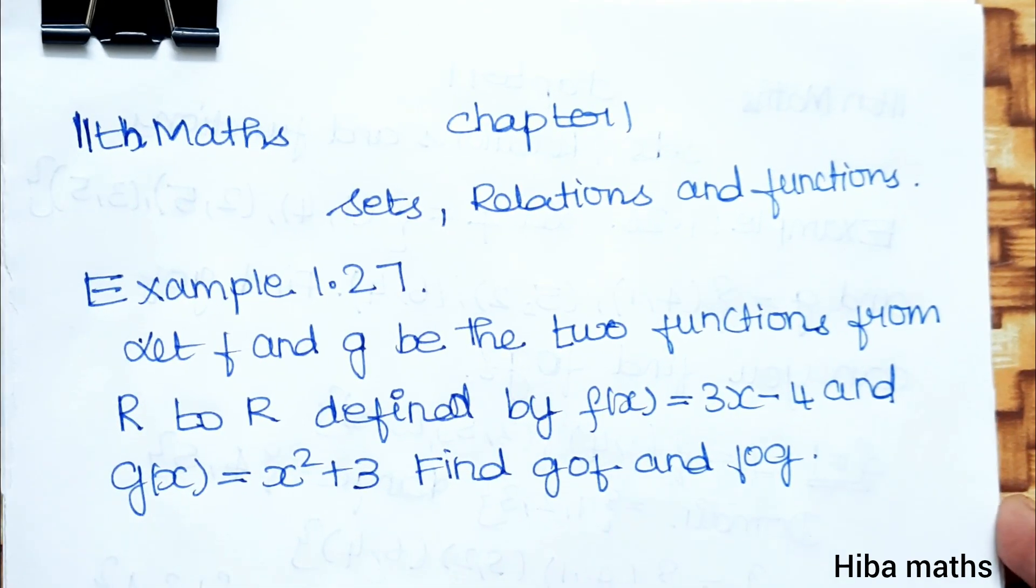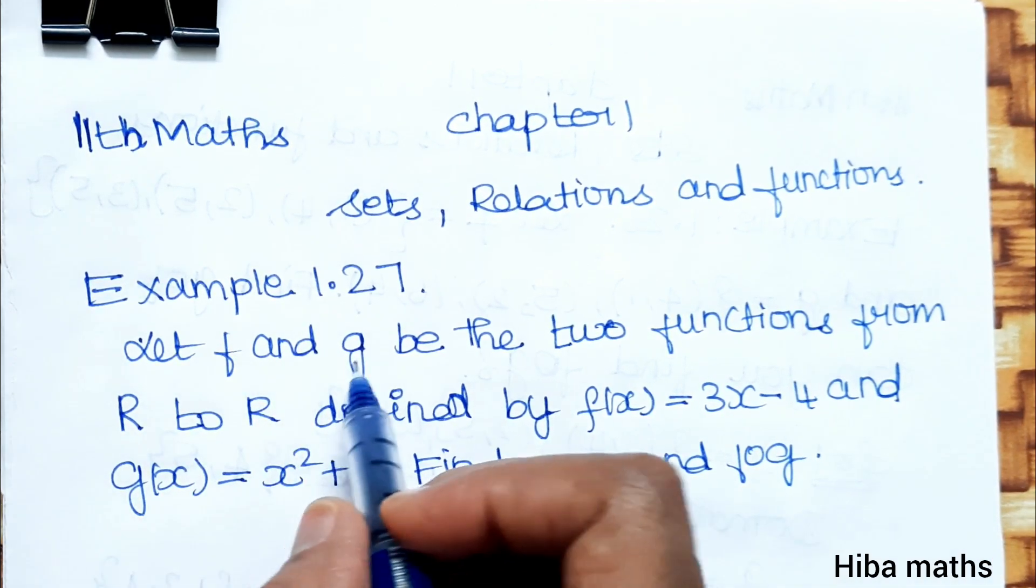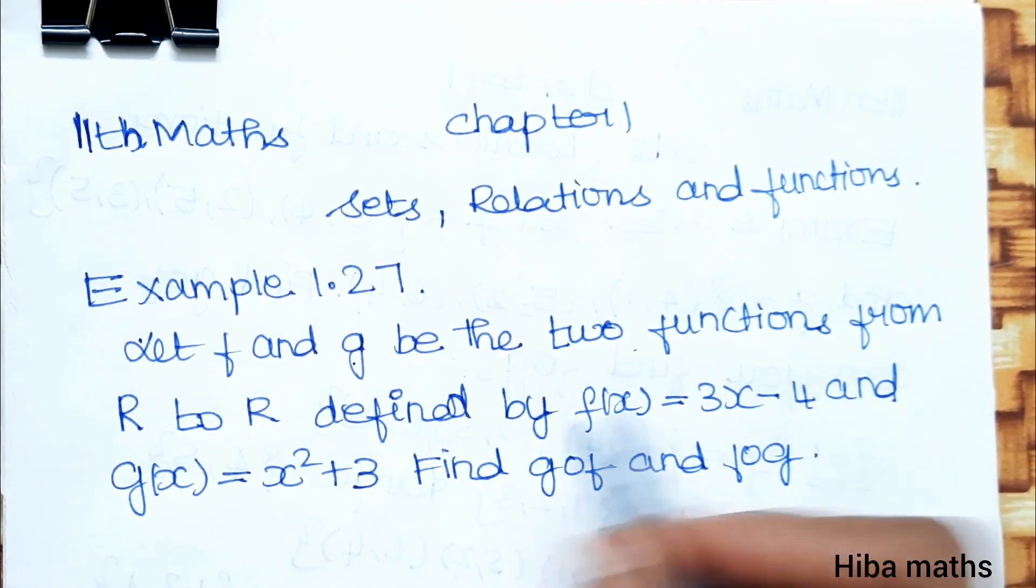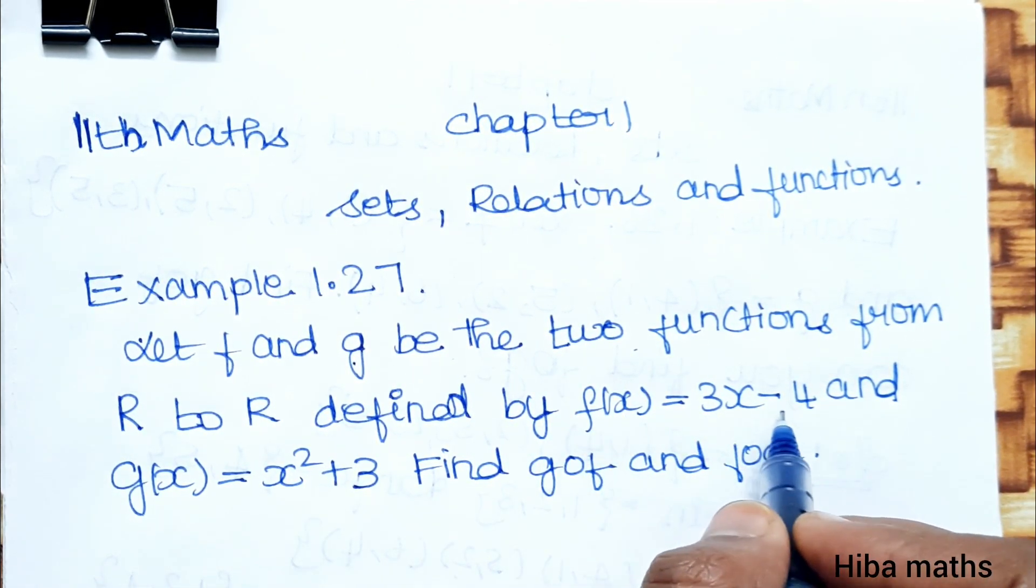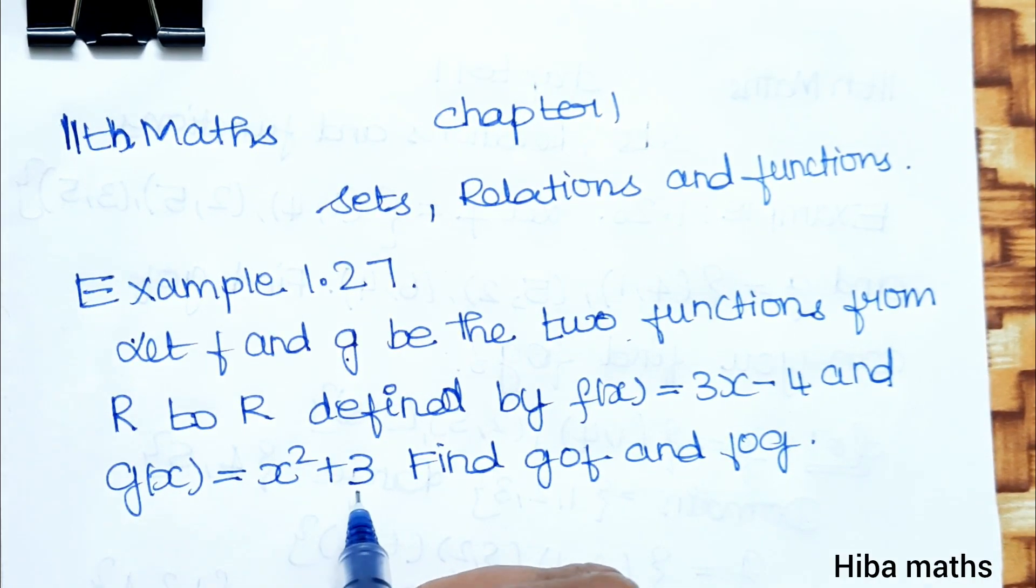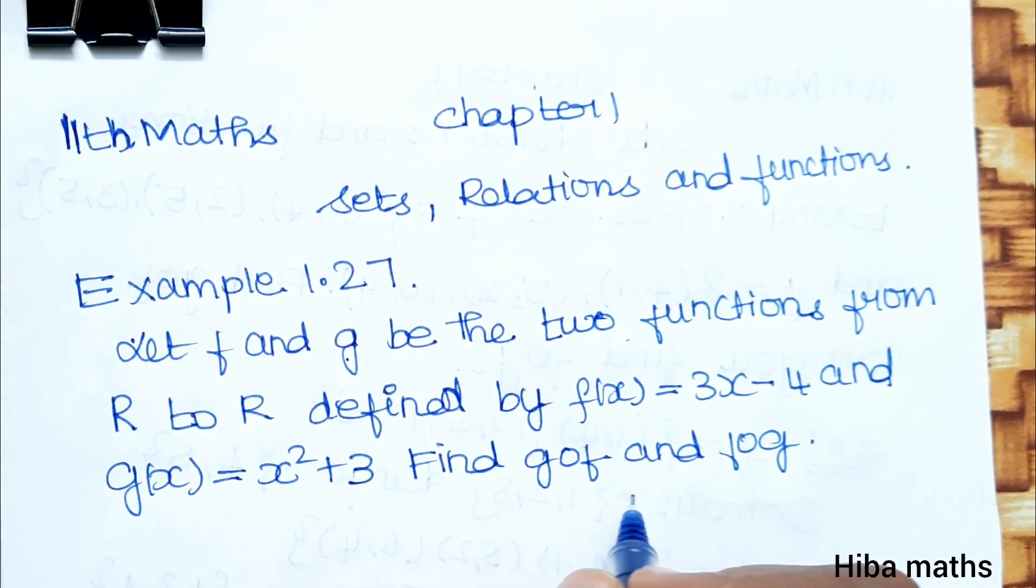Hello students, welcome to Hiba Maths. 11th standard maths, Chapter 1: Sets, Relations and Functions, Example 1.27. Let f and g be the two functions from R to R defined by f(x) equals 3x minus 4 and g(x) equals x square plus 3. Find g of f and f of g.